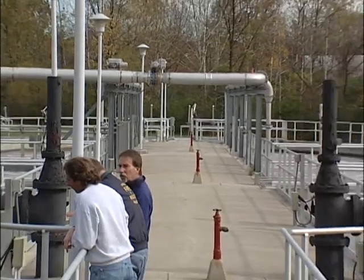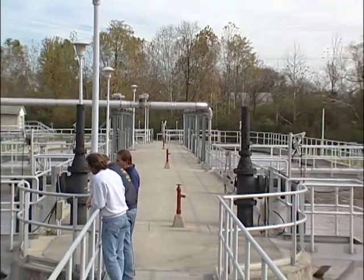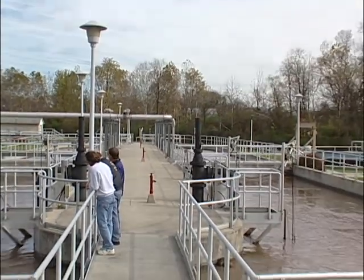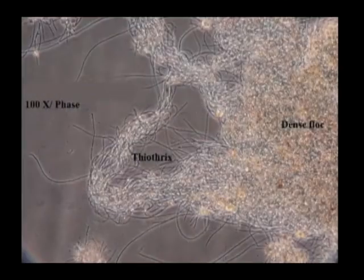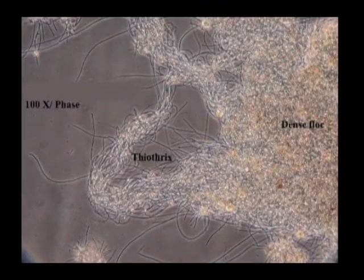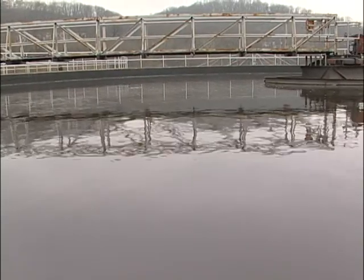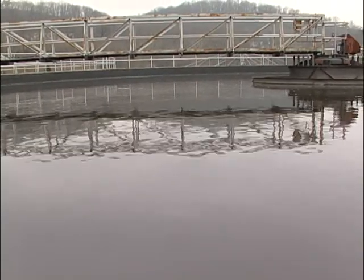Better process control. Typically, the anoxic zone helps to control troublesome filamentous organisms and provides for better sludge settling characteristics. The uptake of CBOD in the anoxic zone starves the troublesome filamentous organisms of their food source.